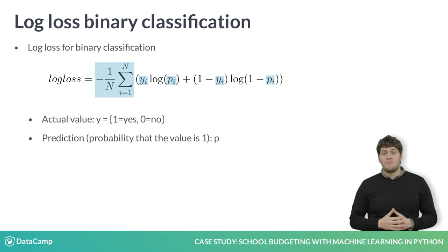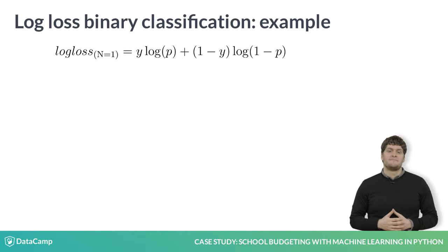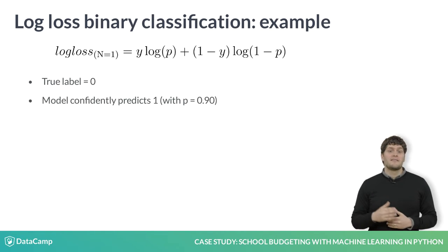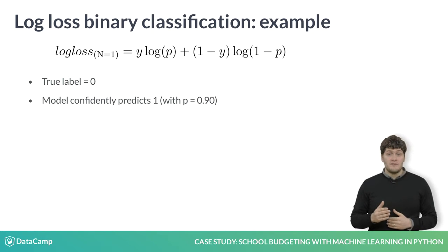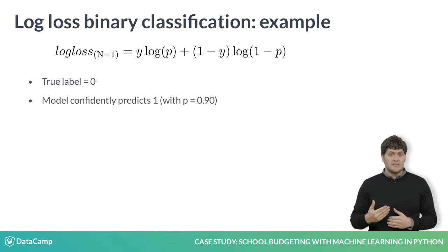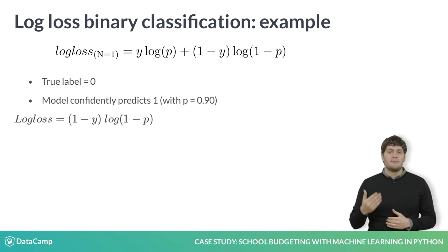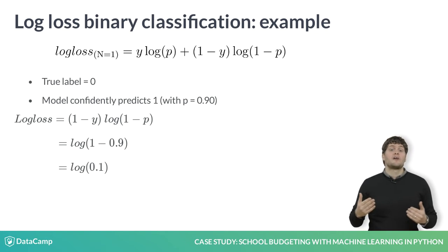We will unpack this math a little more by looking at an example. Consider the case where the true label is 0, but we predict confidently that the label is 1. In this case, because y is 0, the first term becomes 0. This means that the log loss is calculated by 1 minus y times log of 1 minus p. This simplifies to log(1 minus 0.9), or log(0.1), which is 2.3.